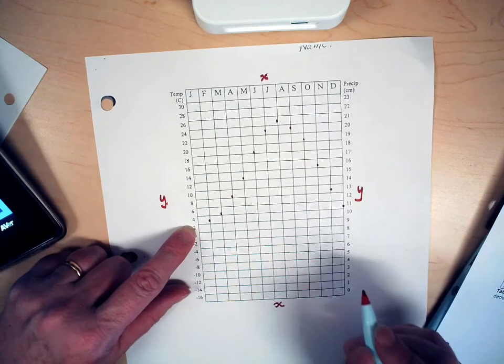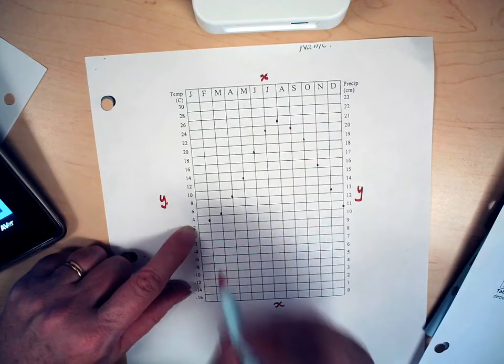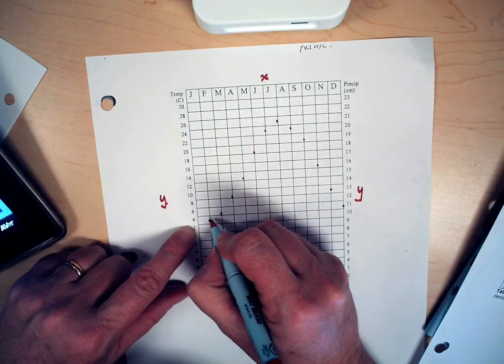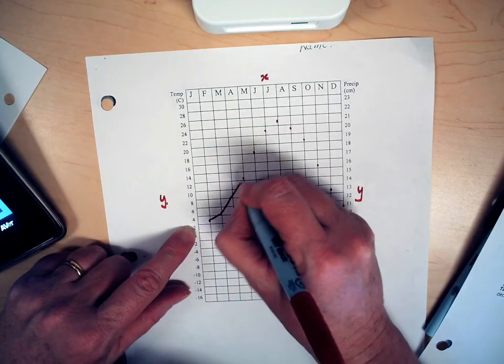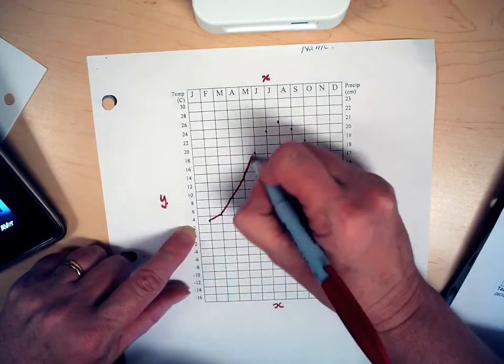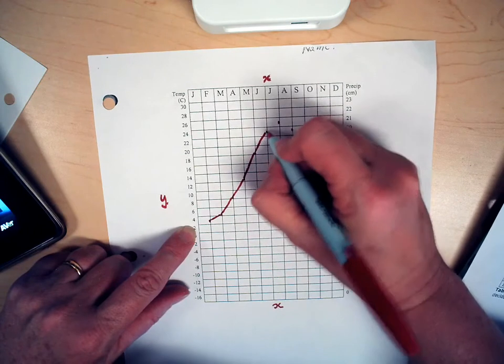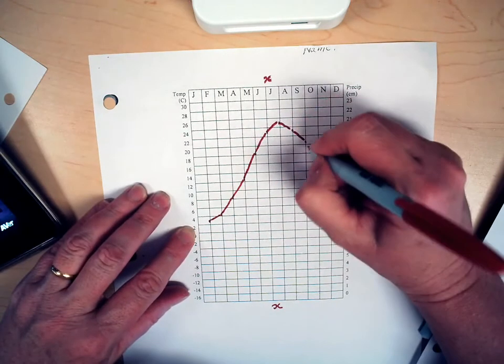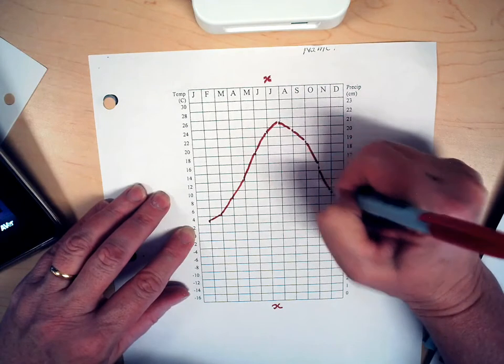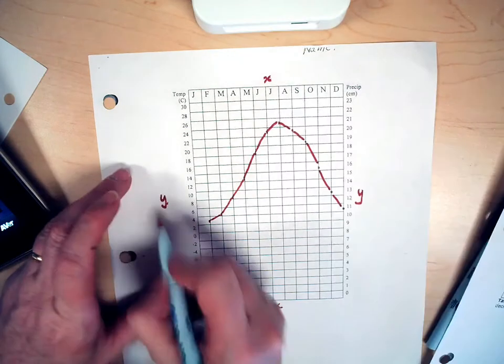So now I'm going to draw my line graph. I would normally use a ruler for this. You should use a ruler for it. Temperature.